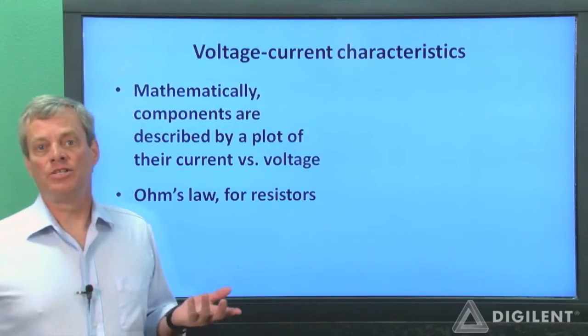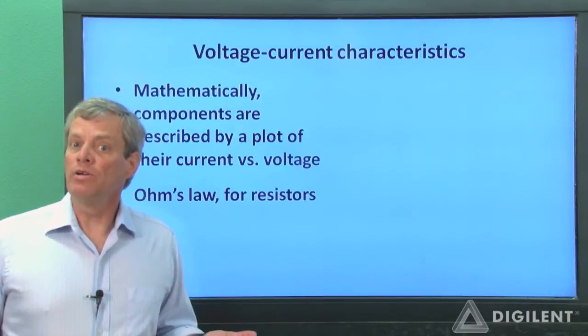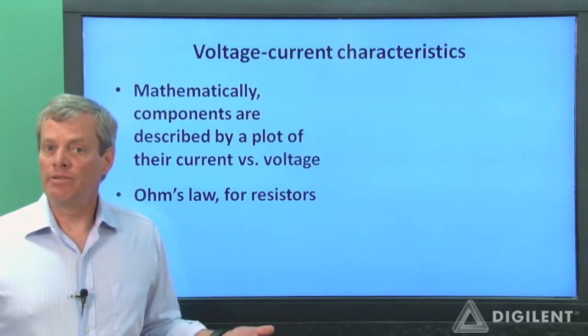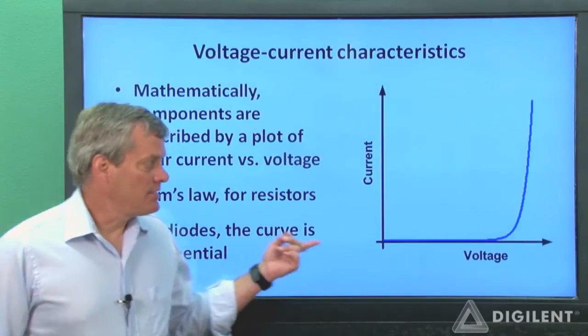Ohm's law allowed us to determine the current through the resistor from the resistance and the voltage across the resistor. It relates voltage and current by resistance. The voltage-current relationship for diodes is exponential.